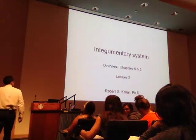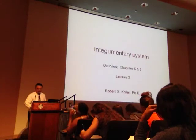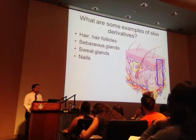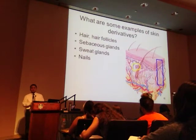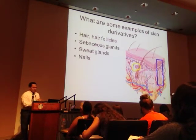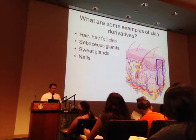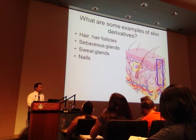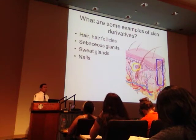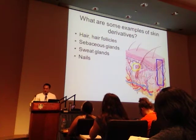This is our second lecture on the integument, and this is where we're going to start picking up on some of the derivatives, to answer some of the other questions that came up about hair. Some of the derivatives or other things you find in the skin are listed here: hair, hair follicles, sebaceous glands, sweat glands — we'll talk about the differences — as well as nails.